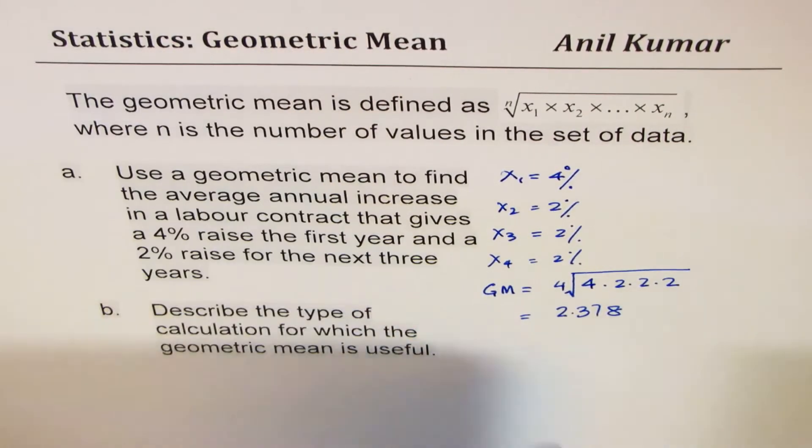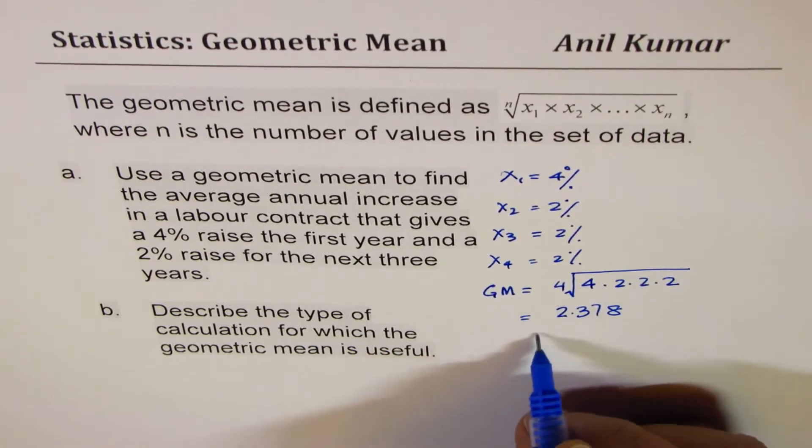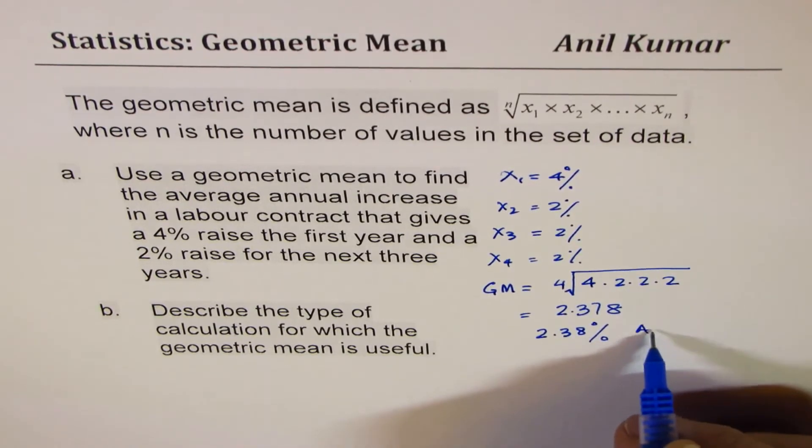So the answer is, the geometric mean is 2.38%. So that is our answer.